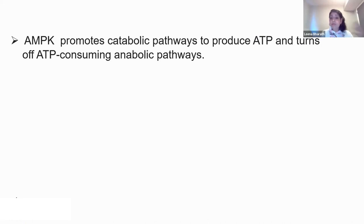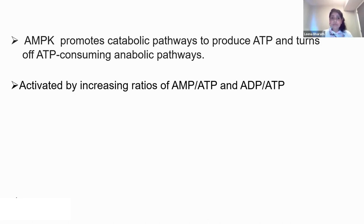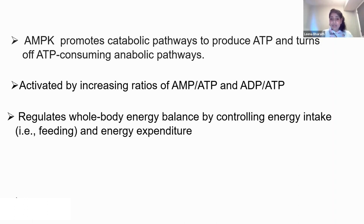AMPK promotes catabolic pathways because it gets activated during energetic stress when ATP levels are low. AMPK turns off pathways that consume ATP and turns on pathways that produce ATP. It is activated when the ratio of AMP to ATP or ADP to ATP increases, making AMP a central energy gauge that senses whole-body energy imbalance.